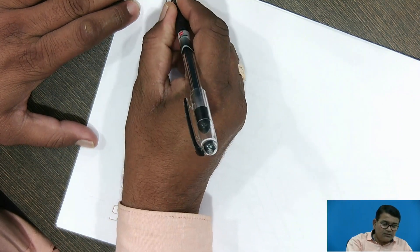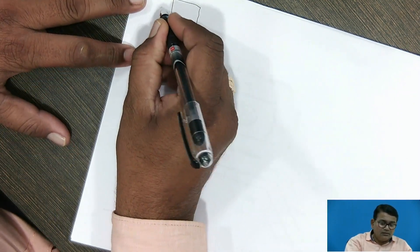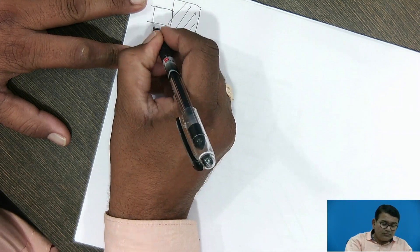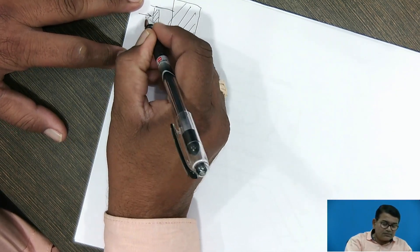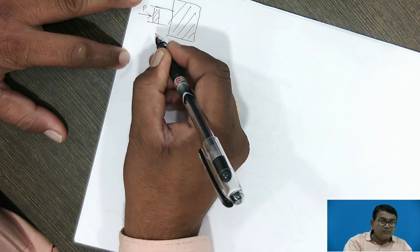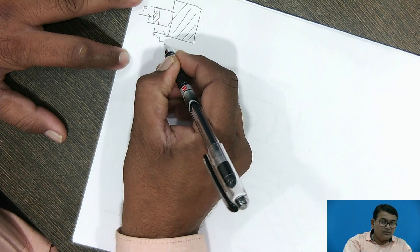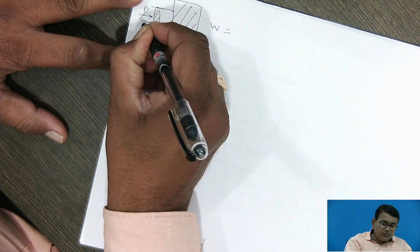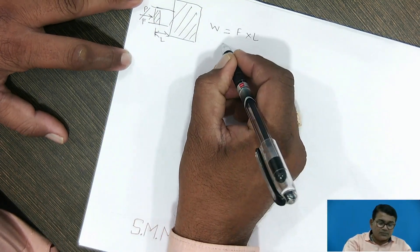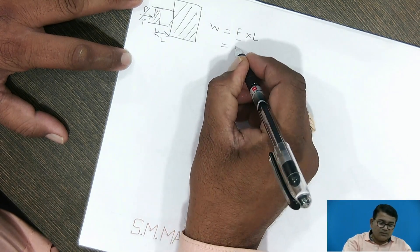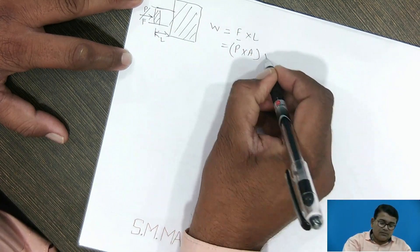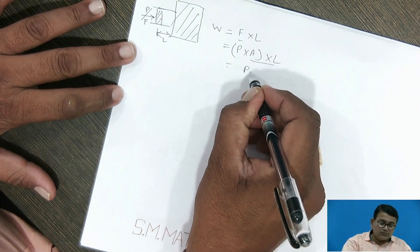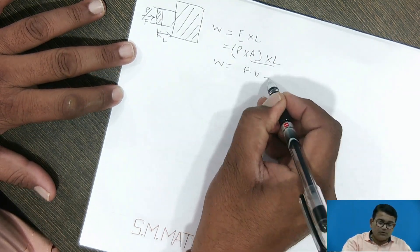The concept is based on control flow mass of that system. Take an example: this is a control volume of that system. In that control volume, suppose mass is entering in that system with a pressure P, and whatever the distance traveled is L. So total work done for that system is force into displacement L. This force is equal to pressure into area into distance traveled L. But area into length is equal to volume, so work done is equal to P into V. That is called flow work.